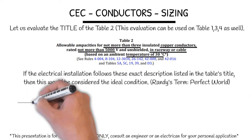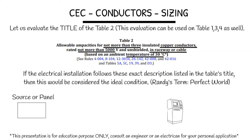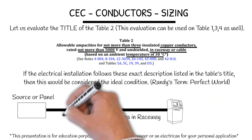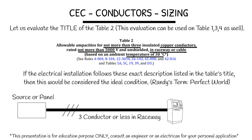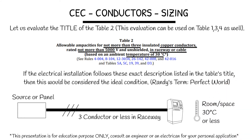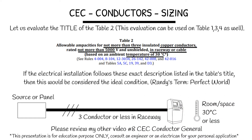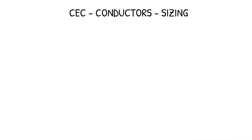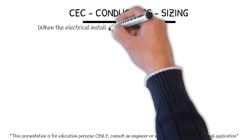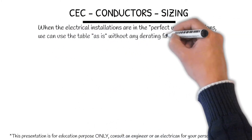Why call it the perfect world? You have 3 conductors or less in the raceway, and the room or space temperature is 30 degrees or less. Please review my other videos, number 8, CEC Conductor General. When the electrical installations are in the perfect world conditions, we can use the table as is without any derating factors.